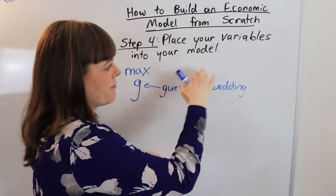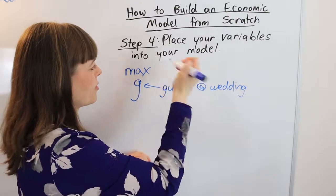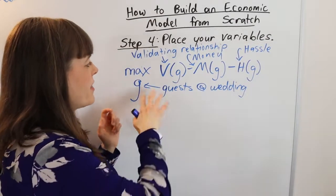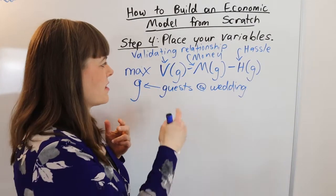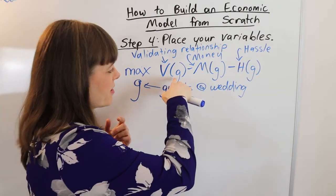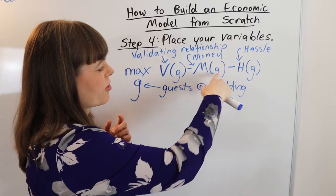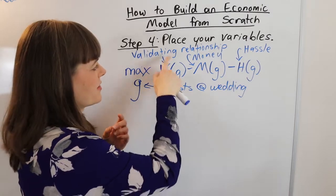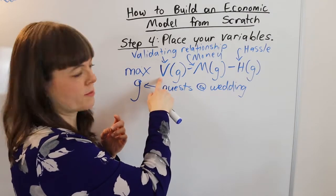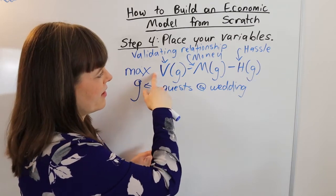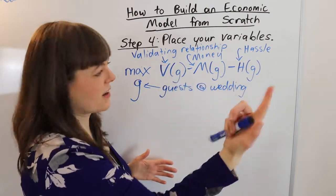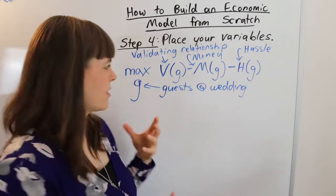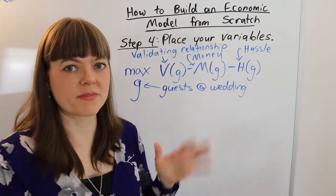And then of course, you need to place your benefits and costs as a function of your choice variable. And if you're familiar with the types of variables and the setup of models, then you'll kind of know the benefits are a function of the choice variable, the costs are a function of the choice variable, and you want to make sure the sign in front of the benefit or cost is associated with whether or not this is a good thing or a bad thing. So is validating relationships good? Yes, it's got a positive sign in front of it. Is spending more money bad? Yes, it's got a negative relationship in front of it. So we're just placing the variables we've come up with into the classic structure of the model. That's the next step.